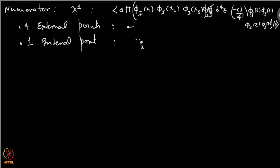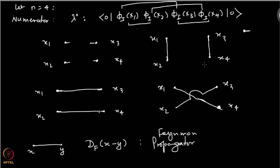These sticks just remind me that there are four fields at the point z — that is the purpose of the sticks. Also remember that whenever you have an internal point, it comes with a factor of minus i lambda over 4 factorial. So when you are writing the expression of this object, this piece will come, and in fact you will also have integral d⁴z — that integral is still there. So this we have to keep in mind.